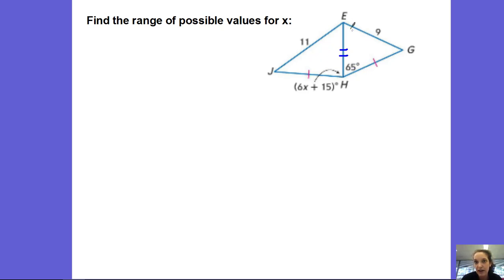Since this side JE is bigger than EG, that means the angle across from it has to be greater than this one. So 6x plus 15 is going to have to be bigger than 65. That's like the smallest it can possibly be. It cannot be smaller than 65, it has to be greater than 65.